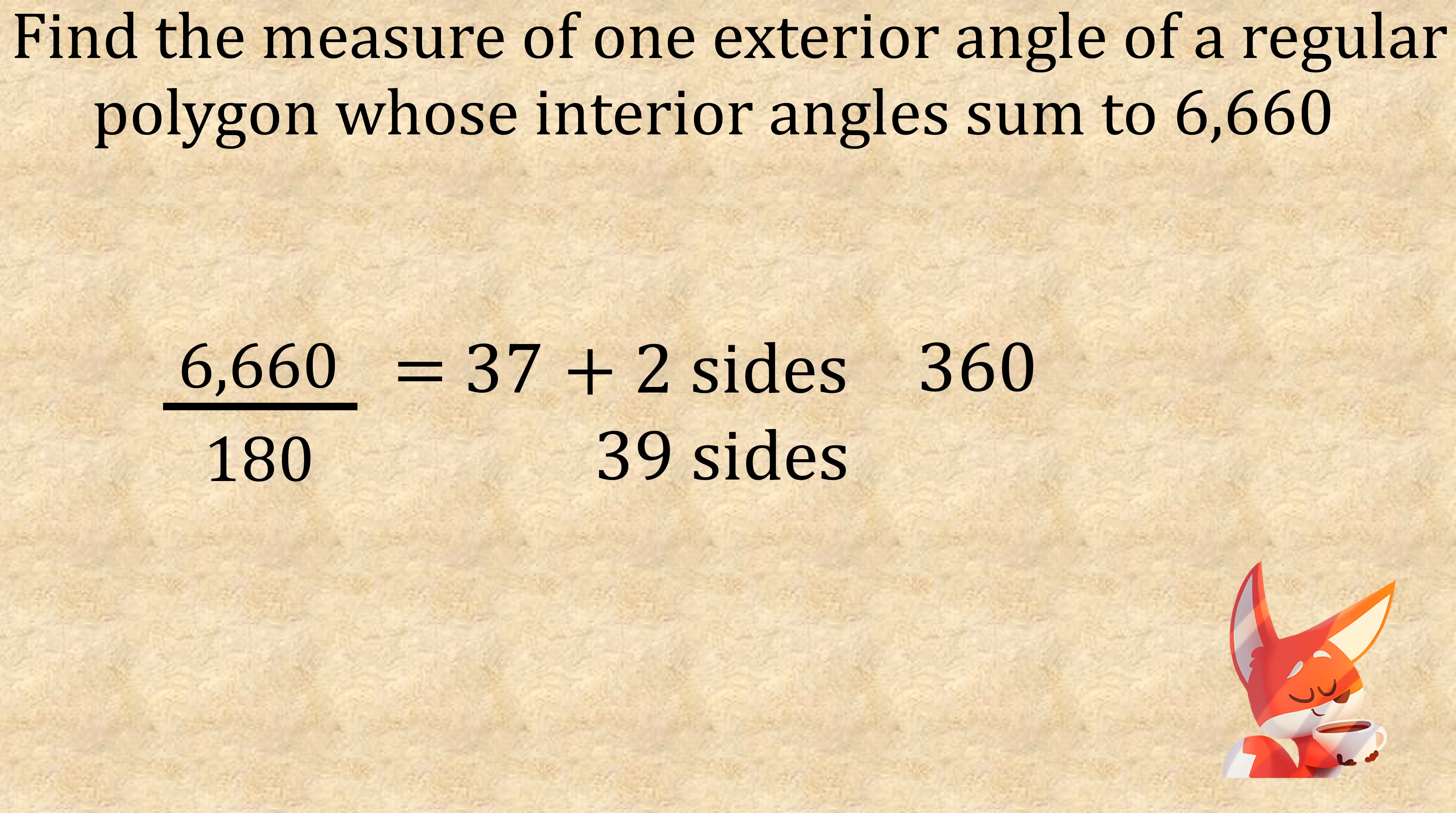Now we divide 360 by 39, which is 9.23 rounded to two decimal places, which means each exterior angle is 9.23 degrees on this polygon.